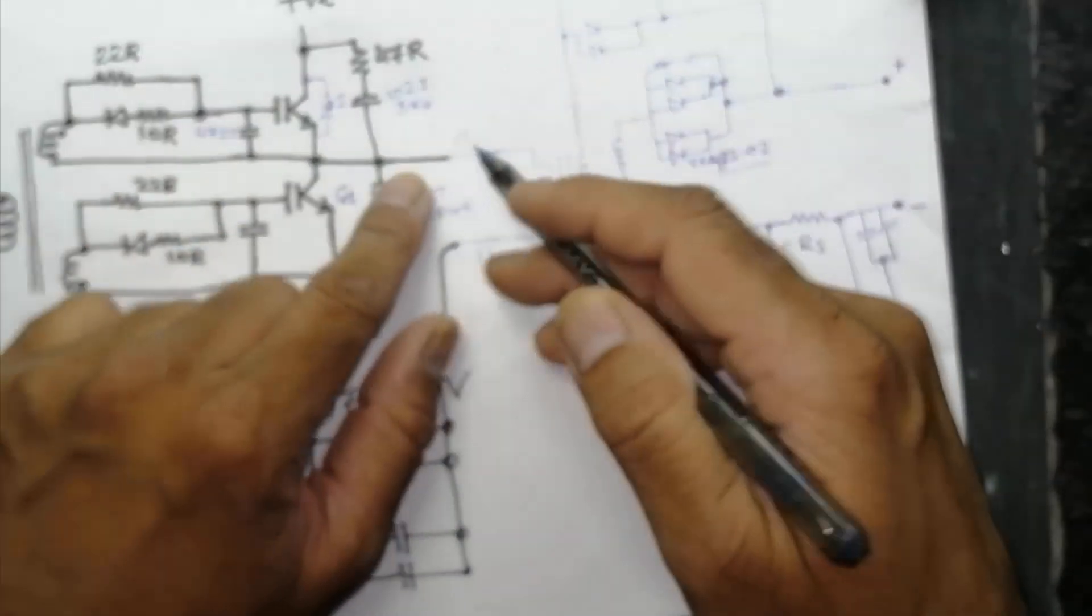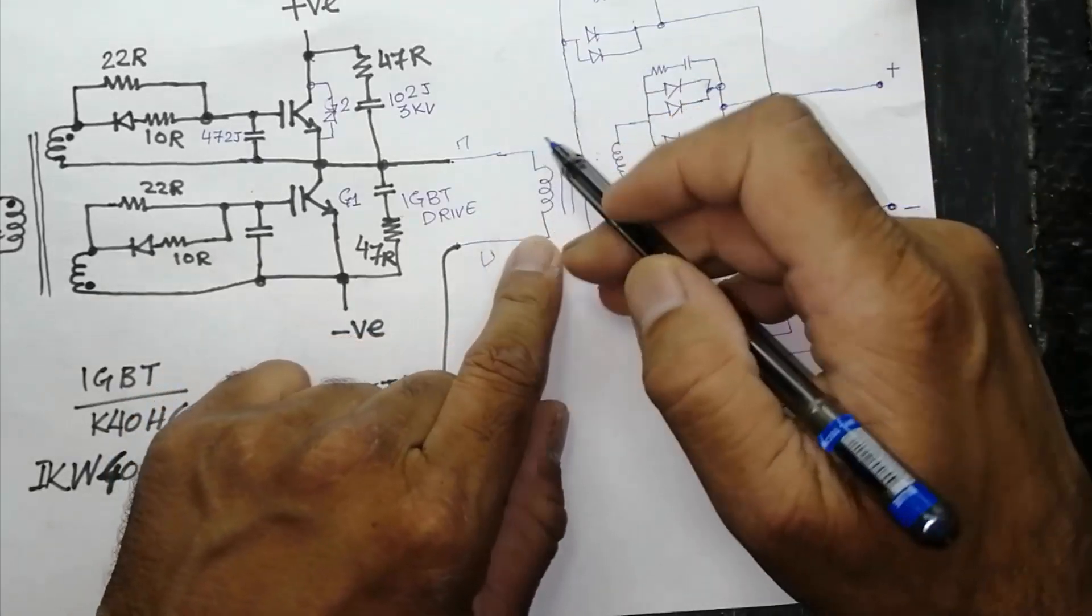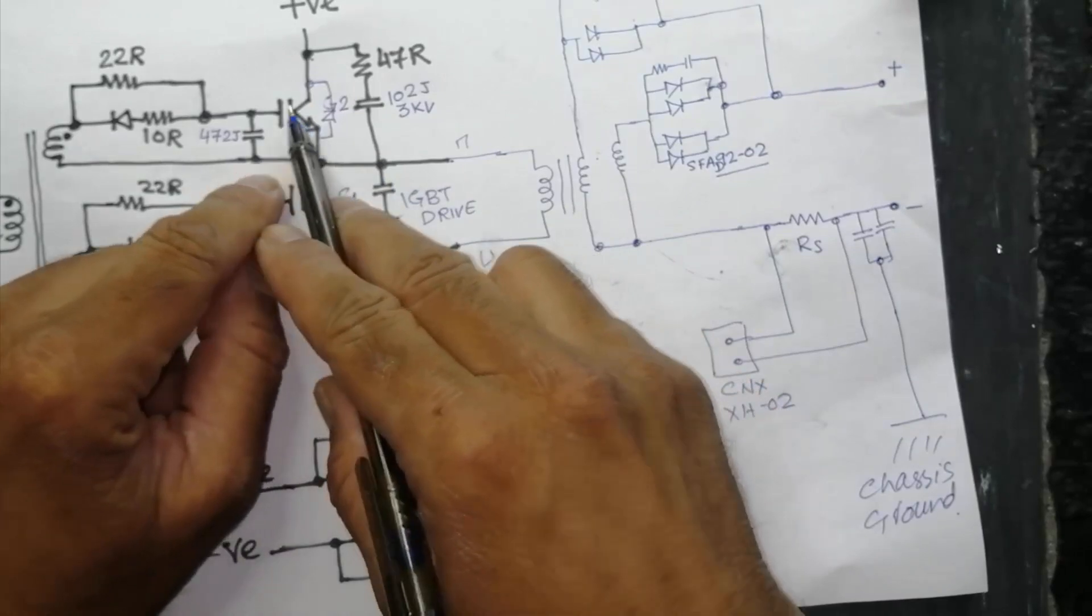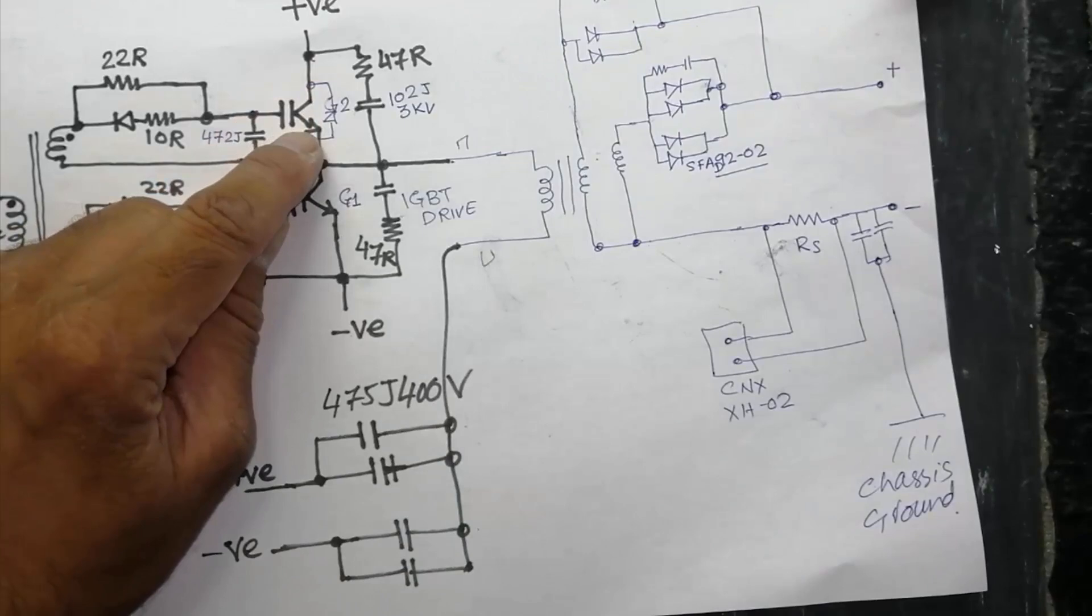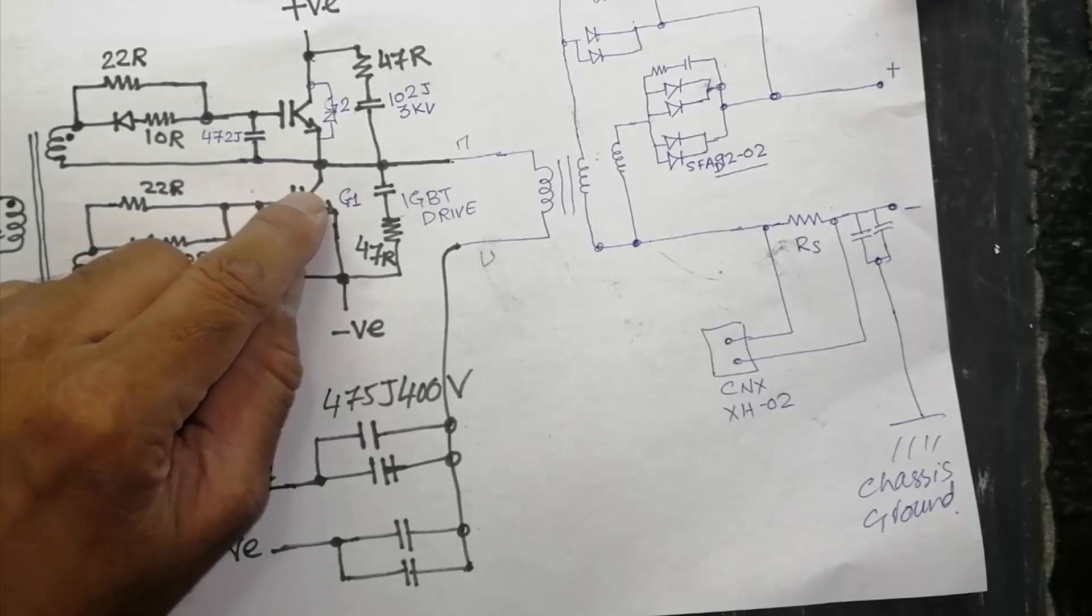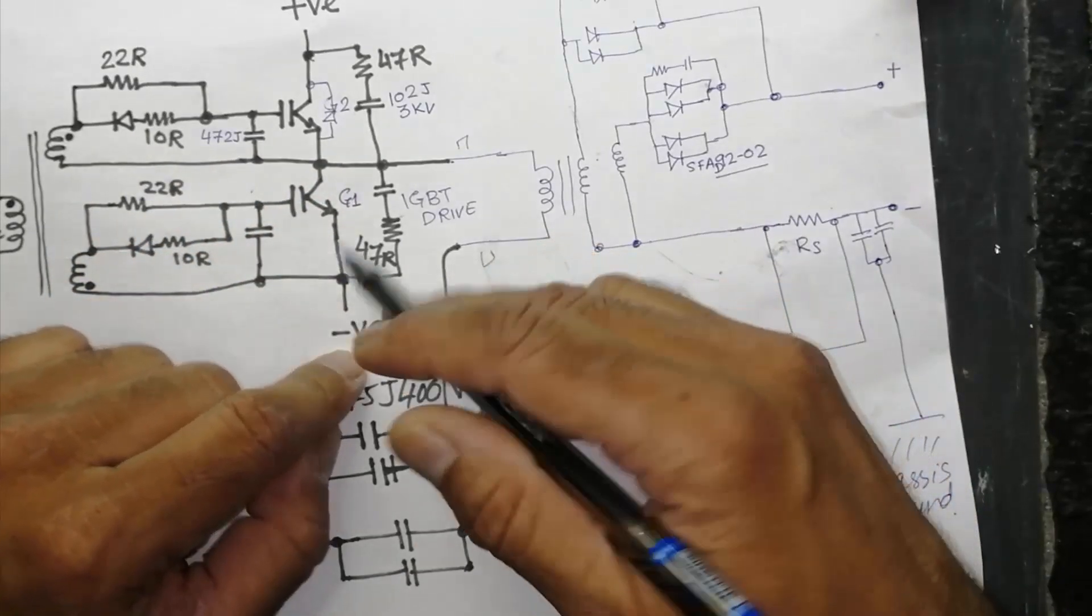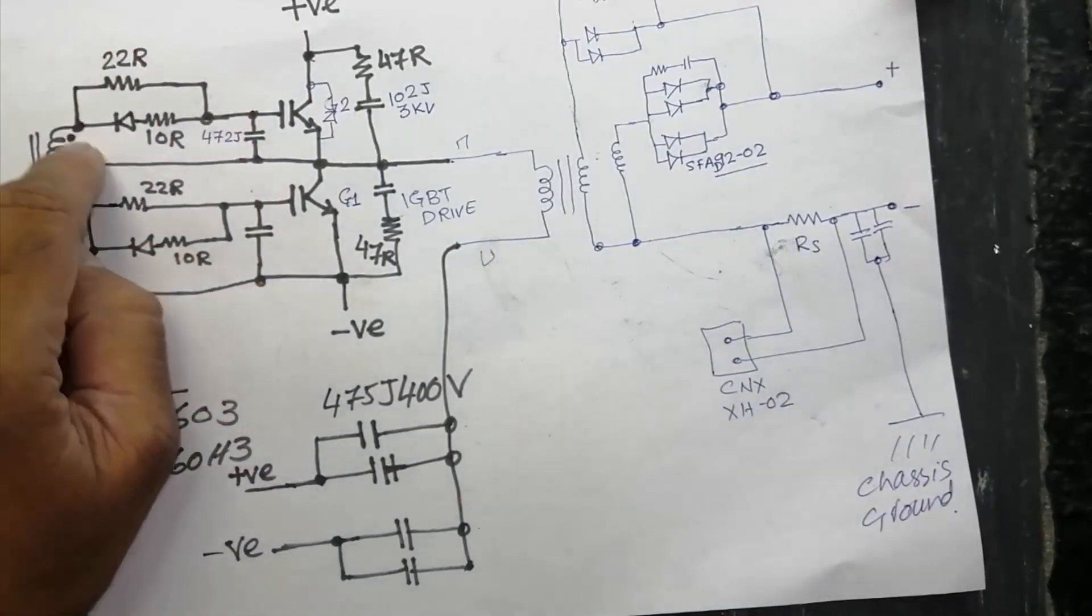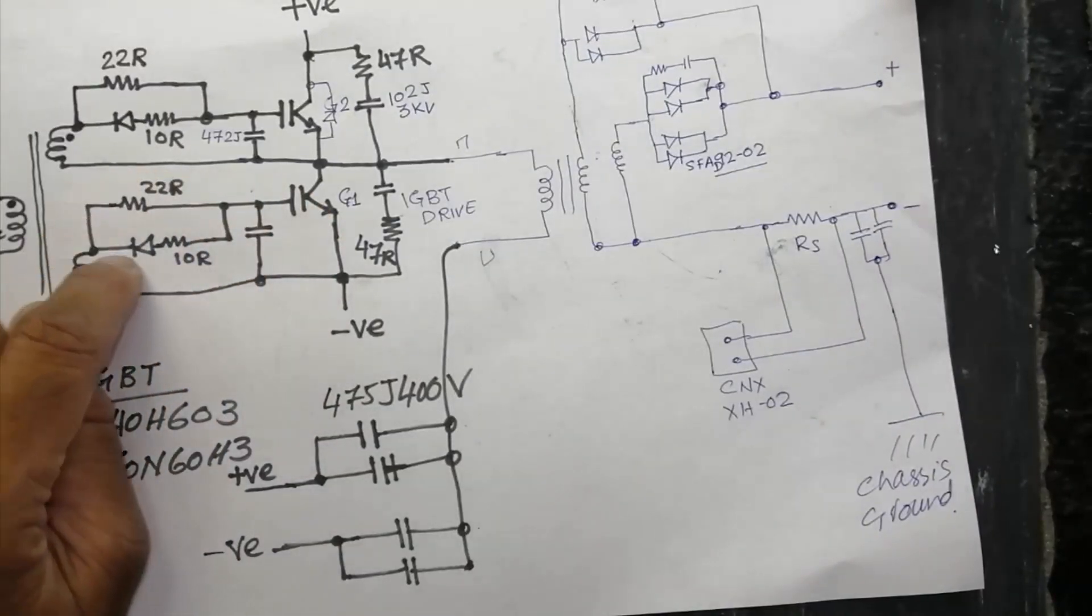First of all we see the diagram. This is our power transformer. Come back to this point we have two IGBTs, collector emitter gate, collector emitter gate. One IGBT's emitter is connected to negative terminal, the second is connected to positive terminal. Here is gate drive network. The second also have the same gate drive network.